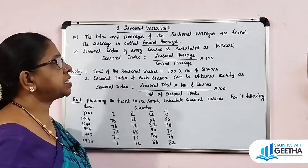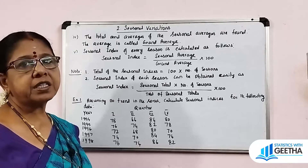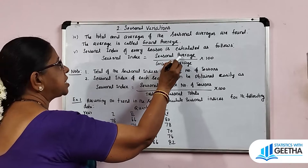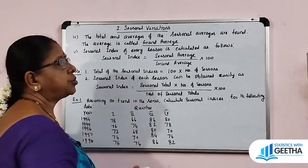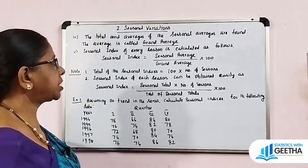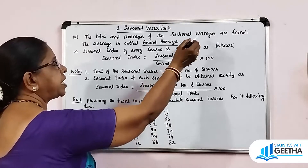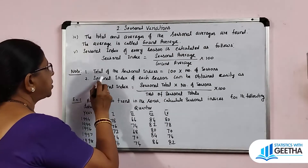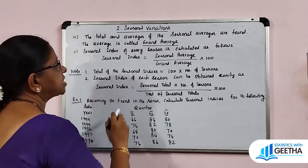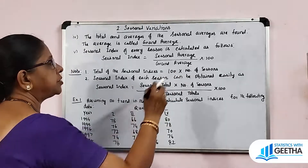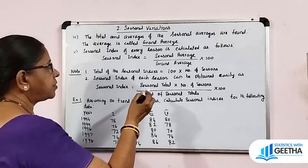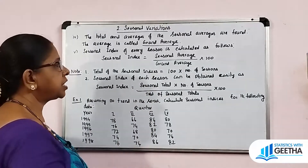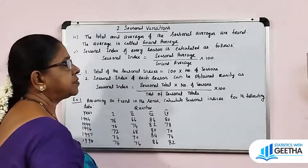Fifth, the seasonal index of every season is calculated. The formula is: Seasonal Index = (Seasonal Average / Grand Average) × 100. Note: the total of the seasonal indices equals 100 multiplied by the number of seasons.